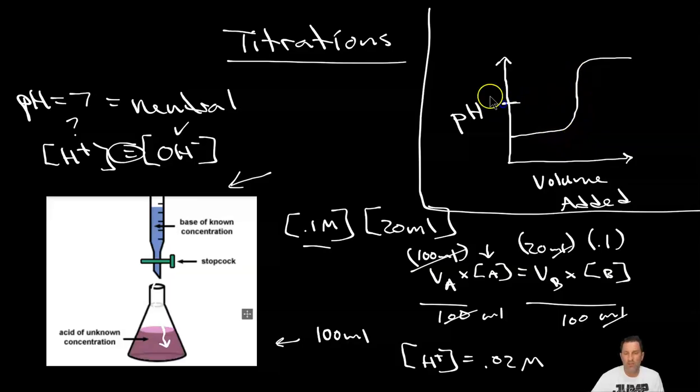This point right here is called the equivalence point. It is when the H plus and the OH minus are equal to each other. Once I'm past that the pH quickly rises and then plateaus again because if I were to keep adding base the solution would just become basic and stay basic. So that is just roughly an introduction to titrations.